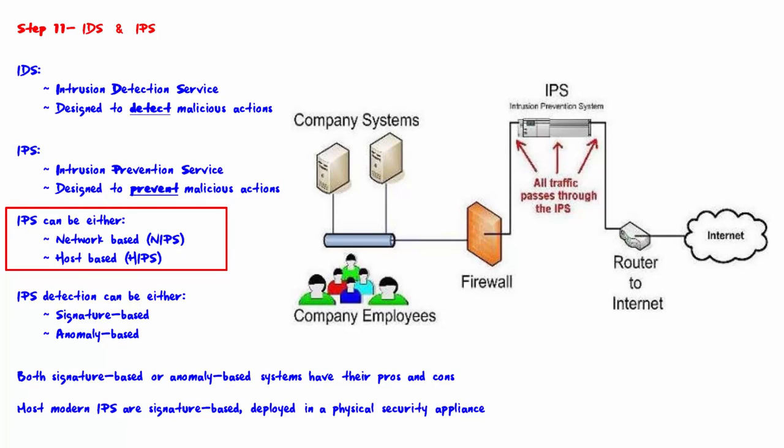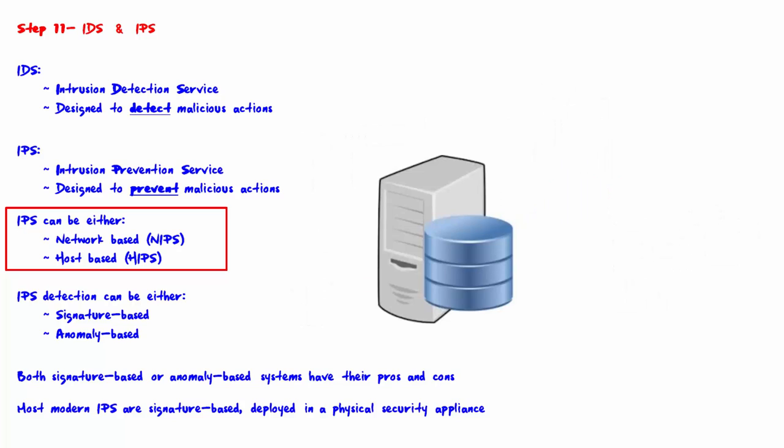IPS can be either network-based (N-IPS) or host-based (H-IPS). Network-based IPS monitors the entire network for malicious traffic by analyzing all TCP/IP traffic entering the network. Host-based H-IPS monitors a single host for malicious activity, usually for unauthorized changes.